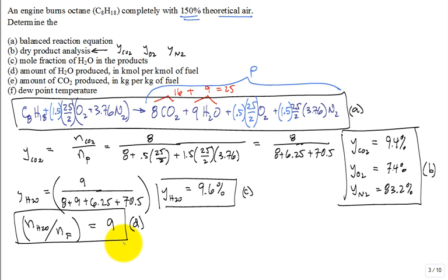I have a question about part C. Okay. Should we consider the 9 moles for the water? Yes, you need to consider that 9 right here. Yeah, so it's the number of moles of vapor per the total number of moles of the products. Right?